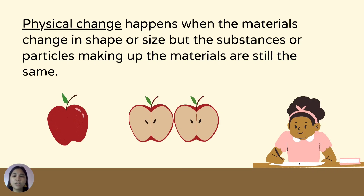There are two ways by which materials change. Physical change happens when the materials change in shape or size, but the substances or particles making up the materials are still the same. These changes are directly observed, like when you cut or slice an apple — there are changes in shape and size, but the material is still the same.